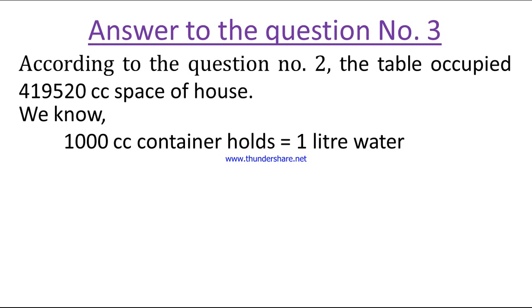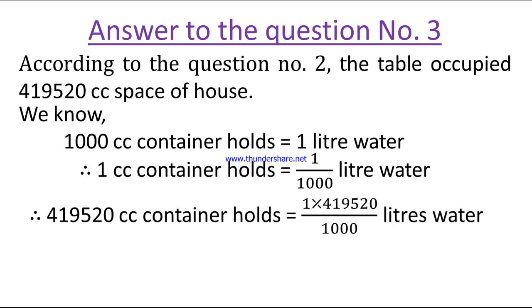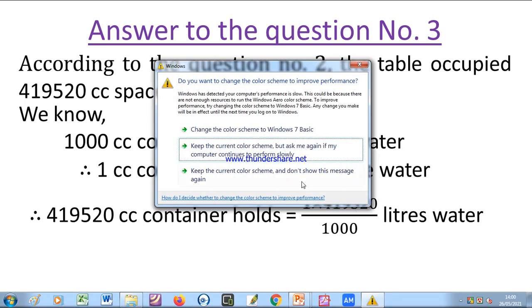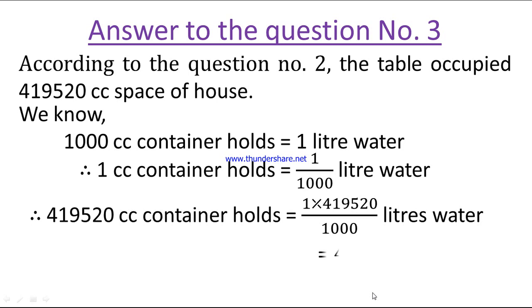So 1 CC container holds equal 1 by 1000 liter water. So 419,520 CC container holds equal to 1 into 419,520 by 1000 liters water, equal to 419.520 liter water.